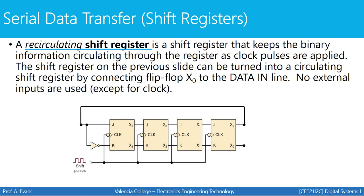Next we have something called a recirculating shift register — a shift register that keeps information circulating through. You load one specific value and it circulates that value over and over through the register; no new data comes in from a user. You use the pre and clear inputs to initially give your register a value, and then it circulates that value. You will study these more in Digital Systems 2, where you'll learn about Johnson and ring counters, which are recirculating shift registers.